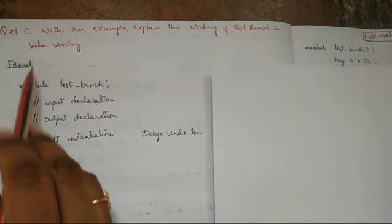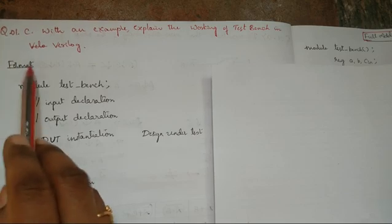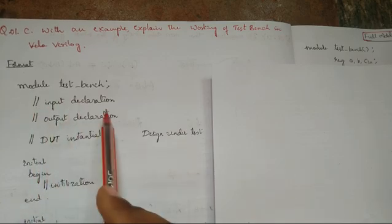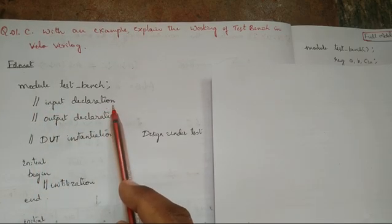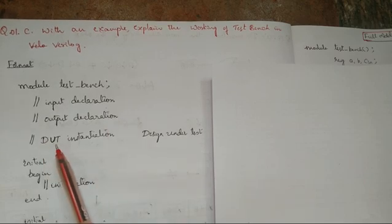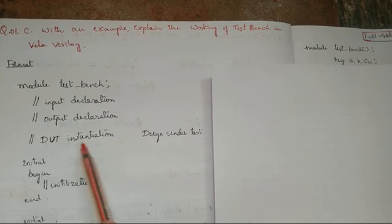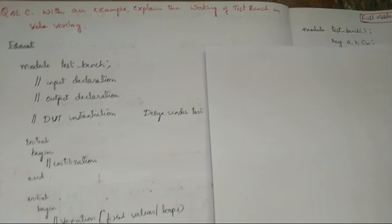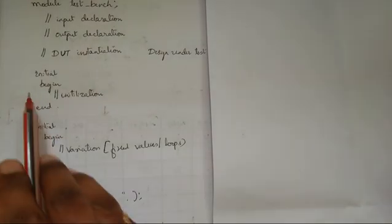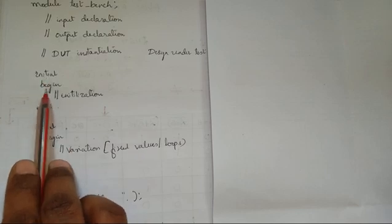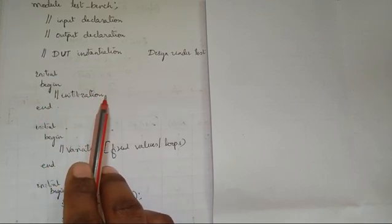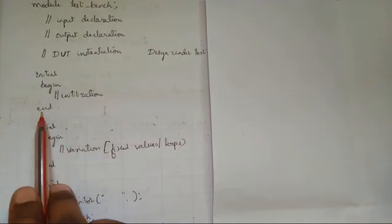First let us understand the format for writing a test bench. We write the keyword module and the test bench name, followed by a semicolon. Then input declaration, then output declaration, then DUT instantiation — that is the design under test. Then we have three initial declarations. The first is: initial begin, initialization of inputs and outputs, end.